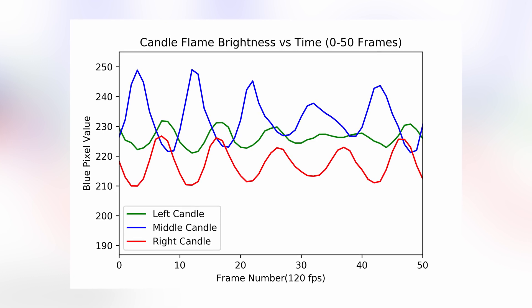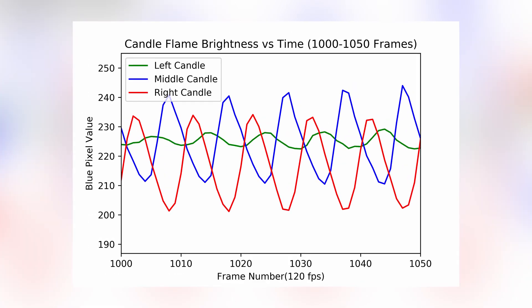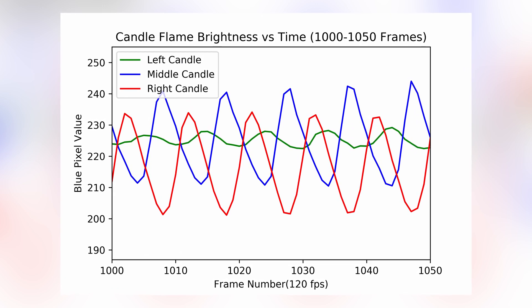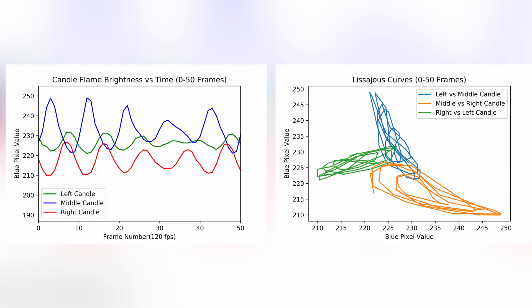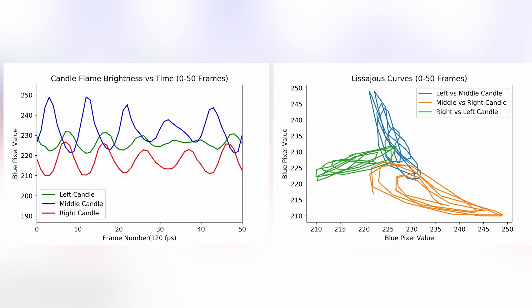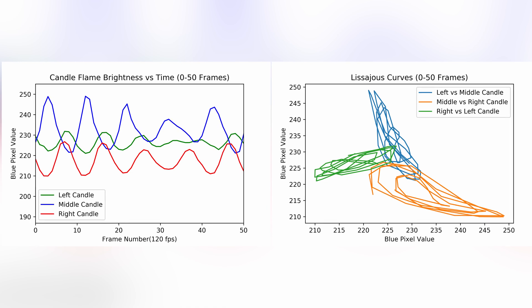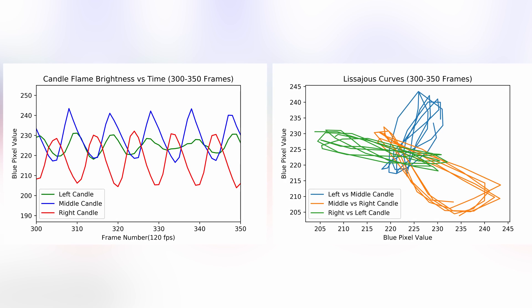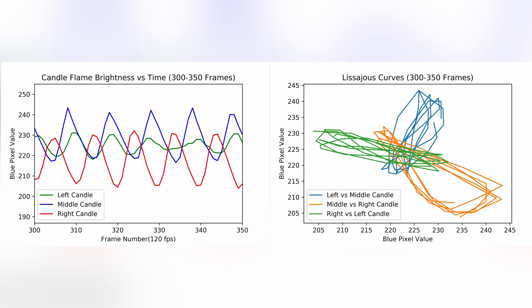First we see that the left and right candles are in phase. Sometimes later, the left and middle candle becomes in phase. At other times, we see a circular progression that goes from the middle candle to the right candle then to the left candle. To determine the phase angle between the three candles, we can make a plot of the brightness of one candle on the x-axis and the brightness of another on the y-axis. If the candles are perfectly in phase or perfectly out of phase, we should see a straight line; if they are 90 degrees out of phase, we should see some sort of loop. This type of graph is called the Lissajous figure, and it is a great way to visualize the phase angle and frequency ratio of different periodic signals.